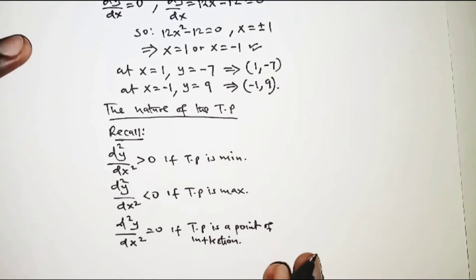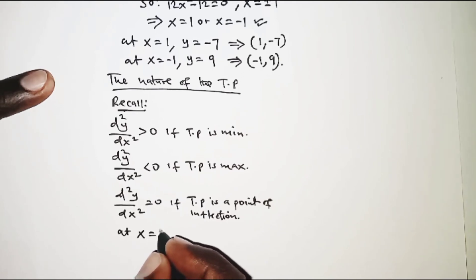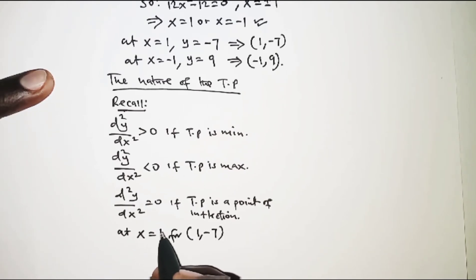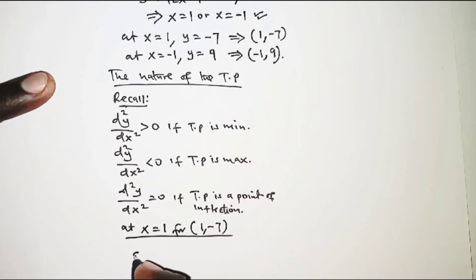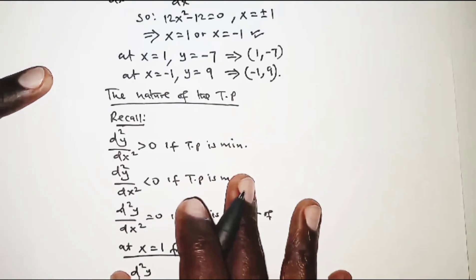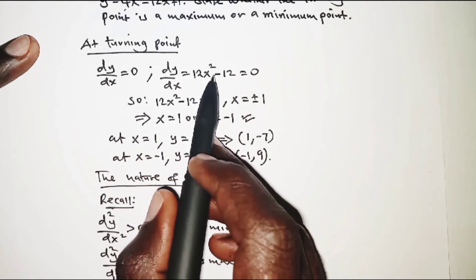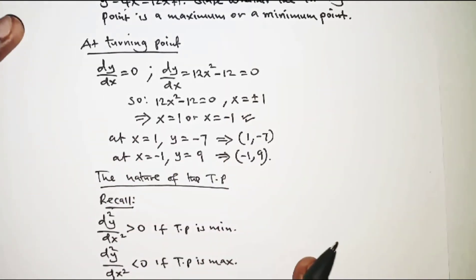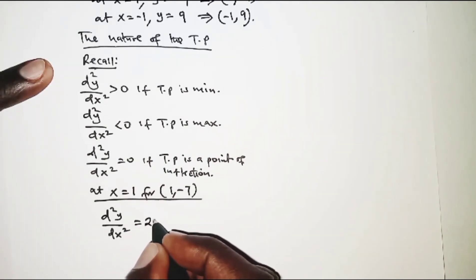With the points we have, at x = 1 for the turning point (1, -7), we are interested in the x-coordinate because we are going to substitute it in the second derivative. We need to get the second derivative — that means we differentiate y a second time. The first derivative was 12x² - 12, so differentiating a second time gives 24x.